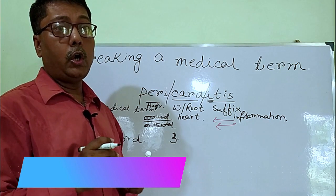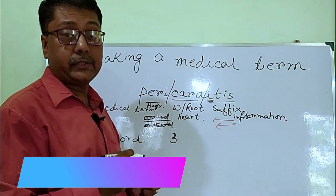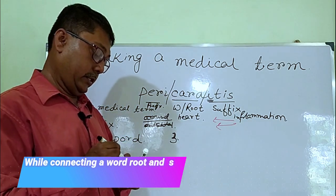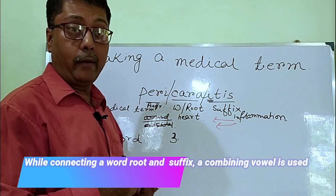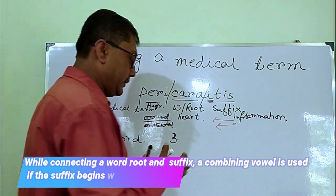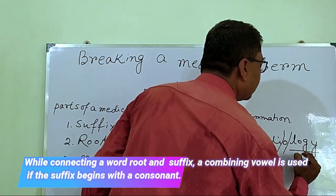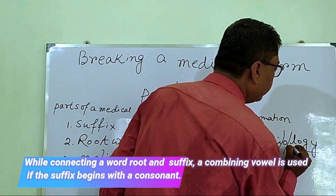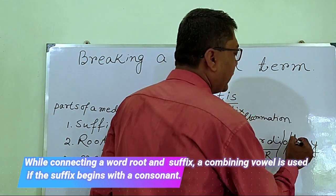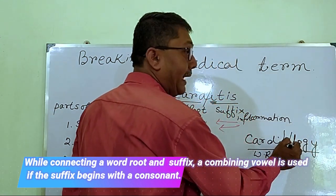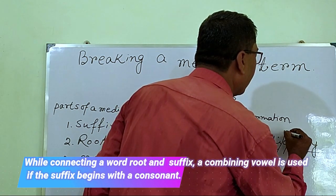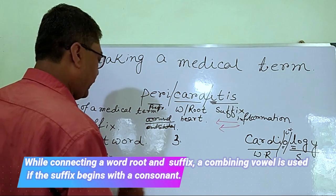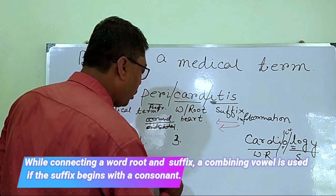Rule number three: if the first letter of the suffix is a consonant, then you should use a combining vowel. For example, '-logy' is a suffix whose first letter 'l' is a consonant, so we use the combining vowel 'o'. Generally the combining vowel is 'o' or 'i'.